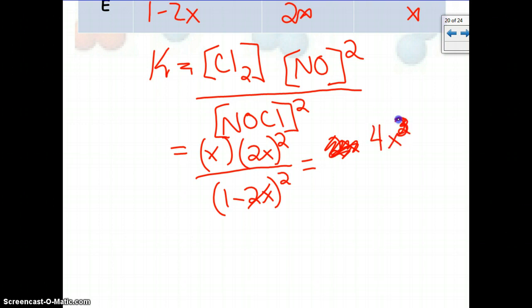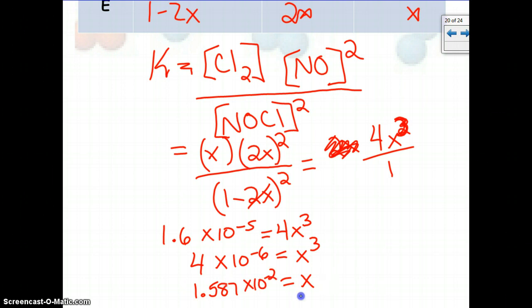2 squared would be 4x cubed. I can do math, I swear. Just having a little issue right now. That's 4x cubed. And then on the bottom, we have 1 squared, which is just 1. So you're left with K, which was 1.6 times 10 to the negative 5th, is equal to 4x cubed. Divide by 4, and you get 4 times 10 to the negative 6th is equal to x cubed. Then if you take the cube root of that, you get 1.587 times 10 to the negative 2nd is equal to x. So that is a very small change.